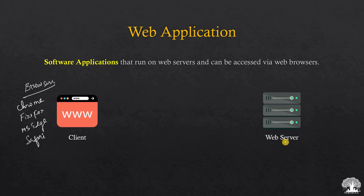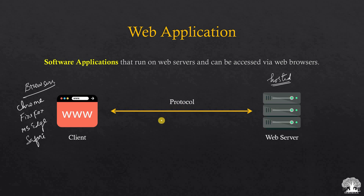On the other side we have the web server. Web servers contain the applications — web applications are hosted on these web servers. These web servers process requests from the client and send back appropriate responses. The communication between clients and the web server happens through a predefined set of rules and regulations we call a protocol. When web applications are concerned, we predominantly use HTTP or HTTPS, which is the secured version of HTTP. There are other protocols as well like FTP and SMTP, and we will discuss those when required.